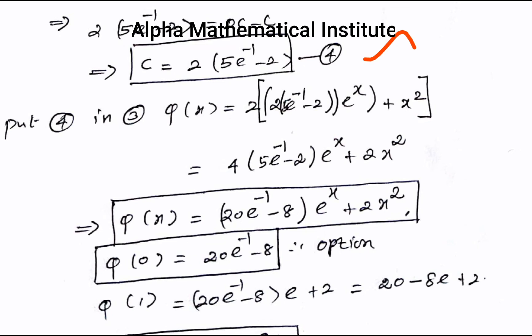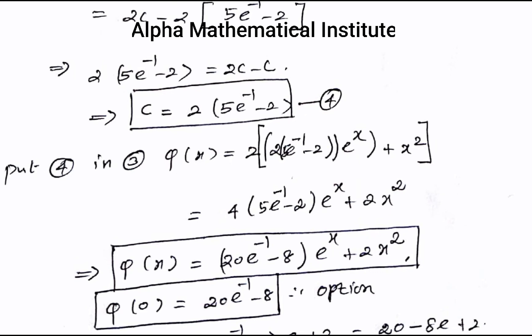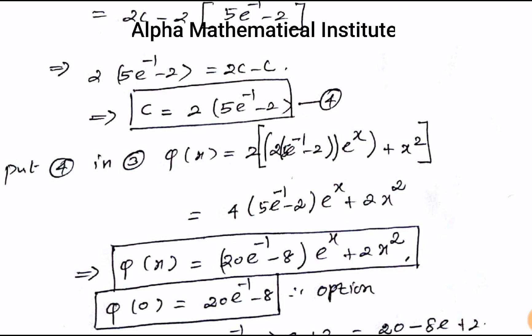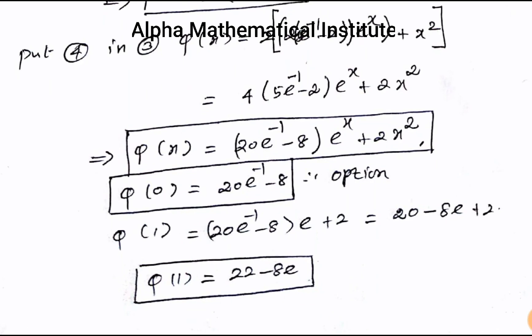After simplification, we get c = 2(5e^(−1) − 2). Substituting this c value into the expression for φ(x) gives φ(x) = (20e^(−1) − 8)·e^x + 2x².